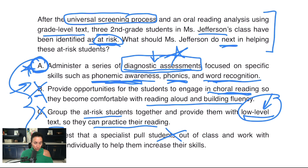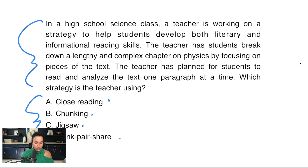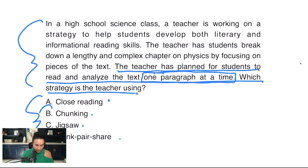It's a little different when working with a question like this. Notice that our answer choices are just one or two word answers, so I can't really narrow it down because close reading, chunking, jigsaw, and think-pair-share could all be the answer. But the question stem is relatively large. So what I'm going to do is read the last little bit first, continuing to work backwards. The teacher has planned for students to read and analyze the text one paragraph at a time. Which strategy is the teacher using? Well, this is leading me to chunking because we're chunking the text by paragraph.